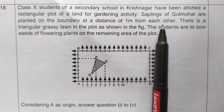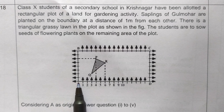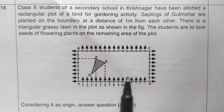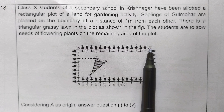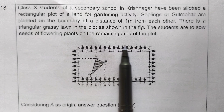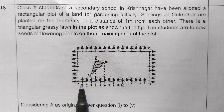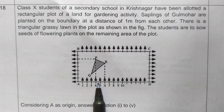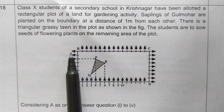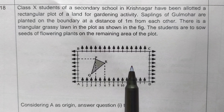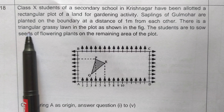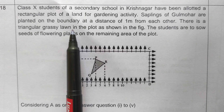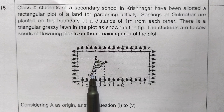In the figure, ABCD is a rectangular land taken for gardening activity. On the boundary, Gulmohar trees are planted and each tree is one meter apart from each other. There is also a triangular grassy lawn PQR alone in the plot, as shown in the figure.